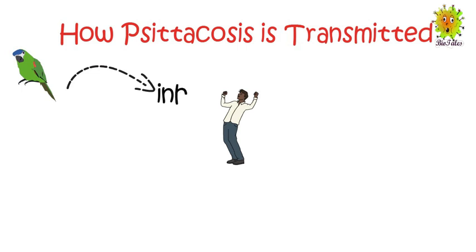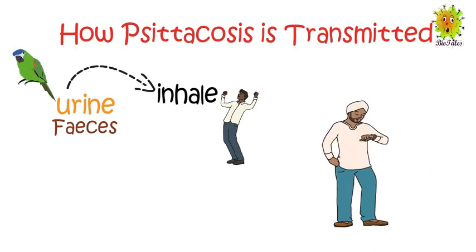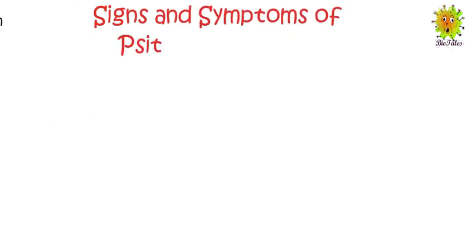Psittacosis is transmitted from birds to humans when a person inhales air contaminated with the urine, feces, or any other body excretion of an infected bird. The disease can also be transmitted if the bird touches its beak to your mouth. Both domestic and wild birds can be involved in transmission. Transfer from human to human is quite rare but not completely impossible — an infected person can transmit psittacosis through coughing droplets if others breathe the same air.